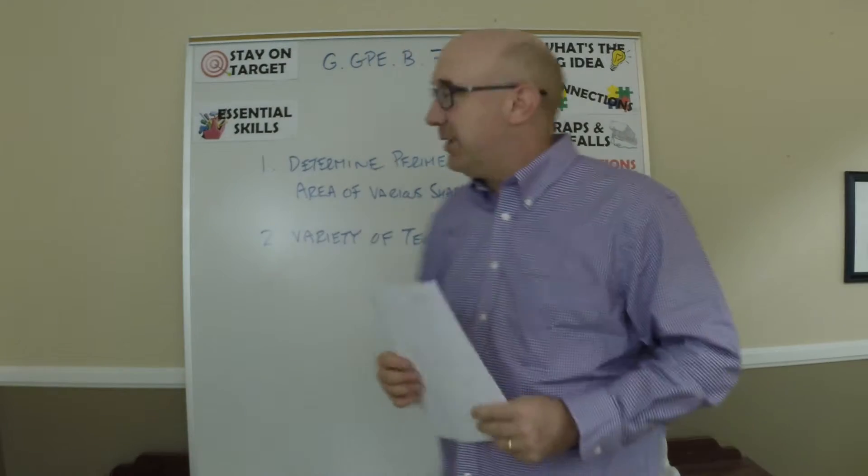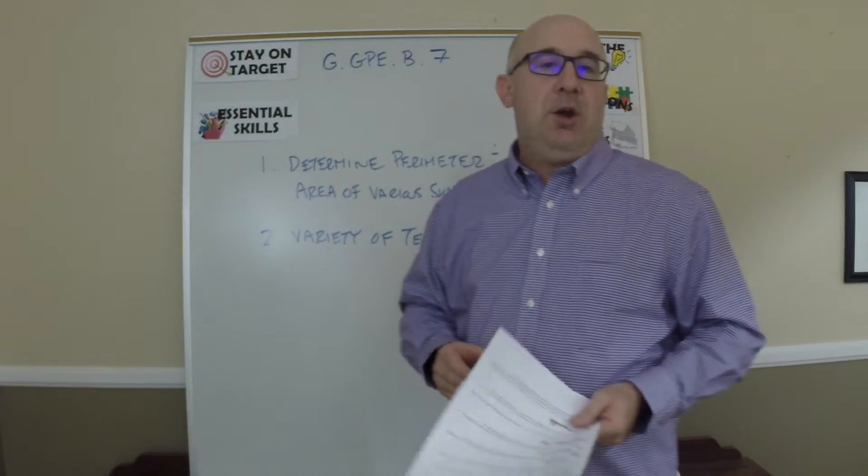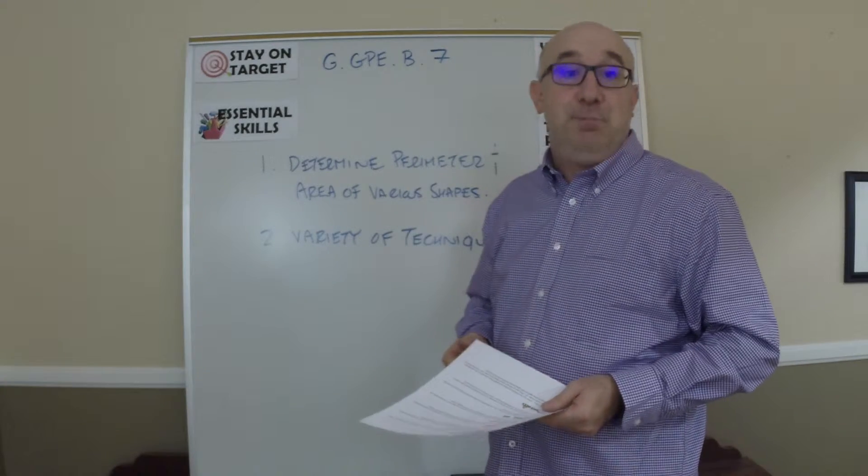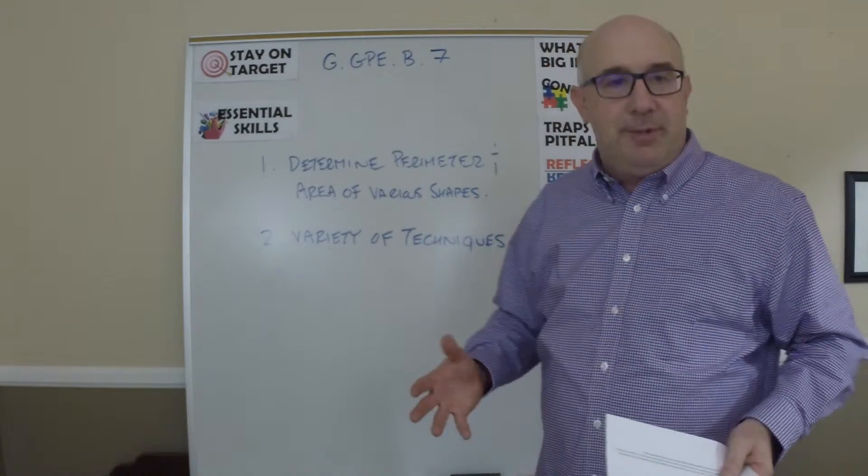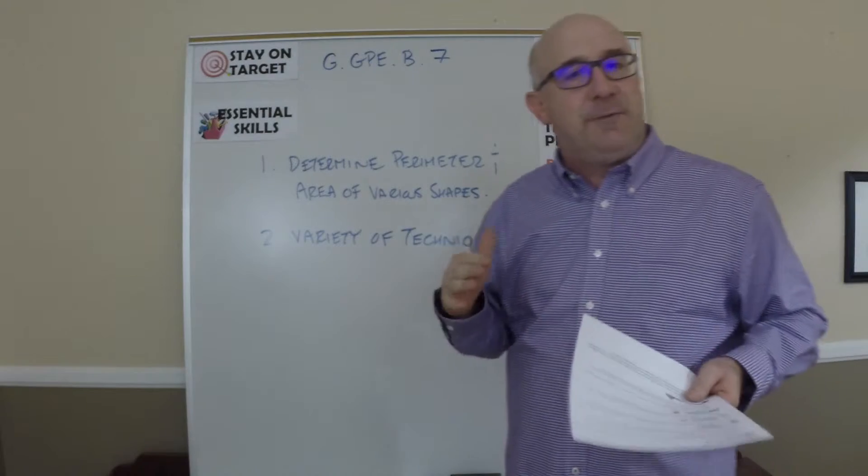All right, let's take a look at the last objective of the unit on coordinate geometry. This is GGPE B7. This reestablishes perimeters and areas, but now we're on the coordinate grid, so we're going to look at different techniques.